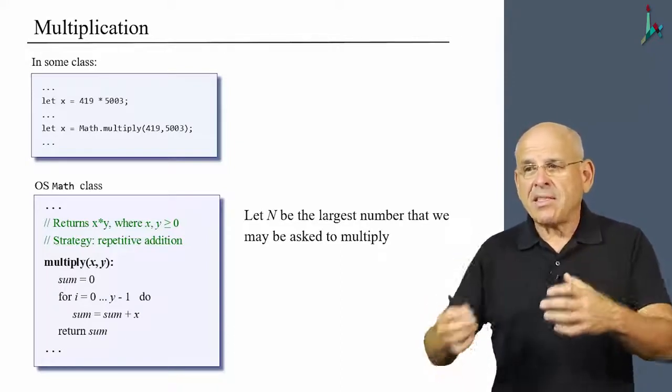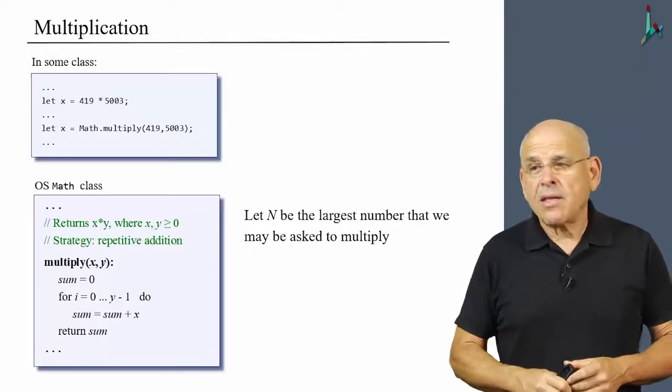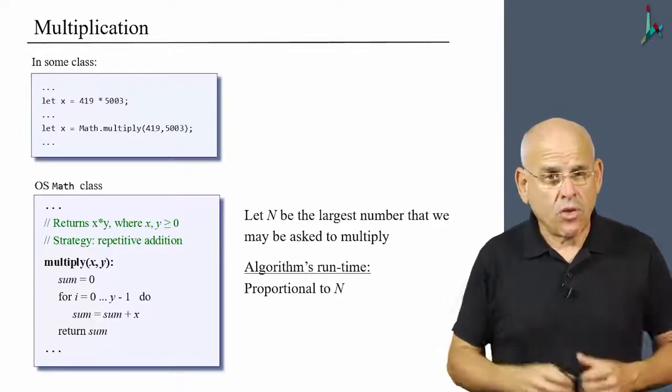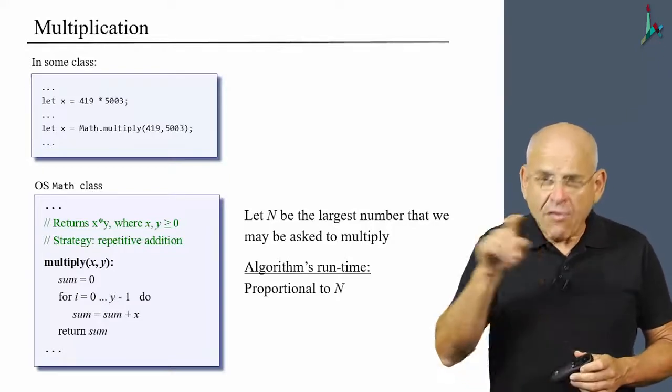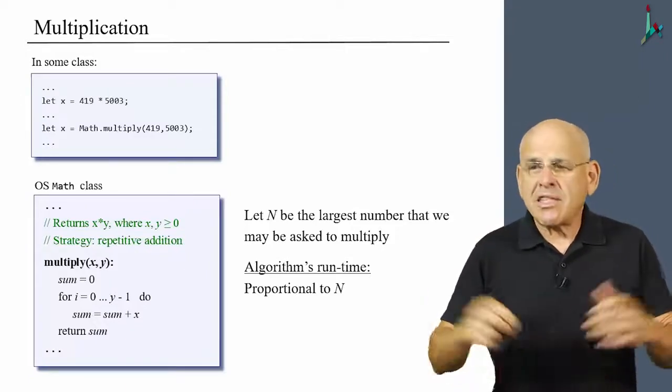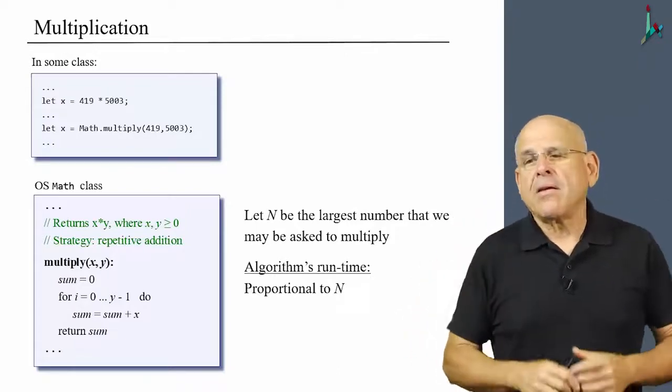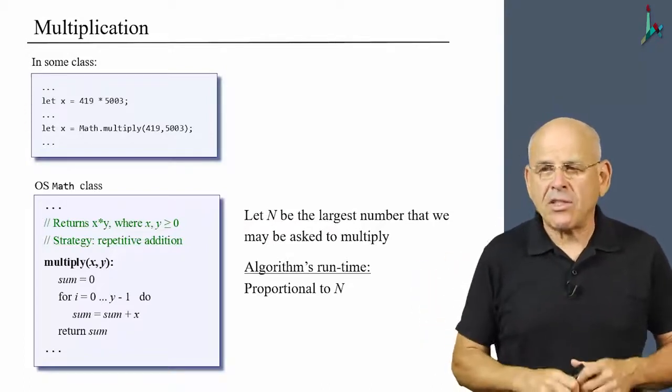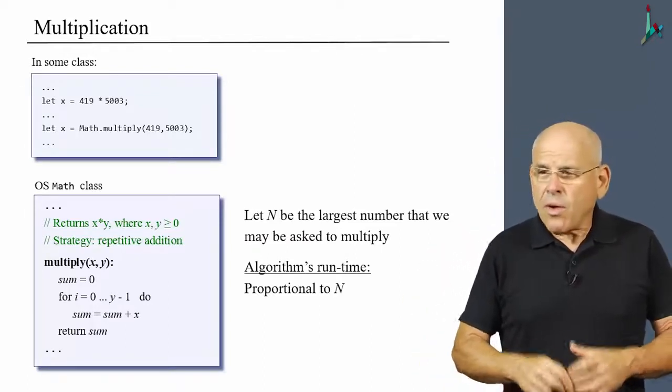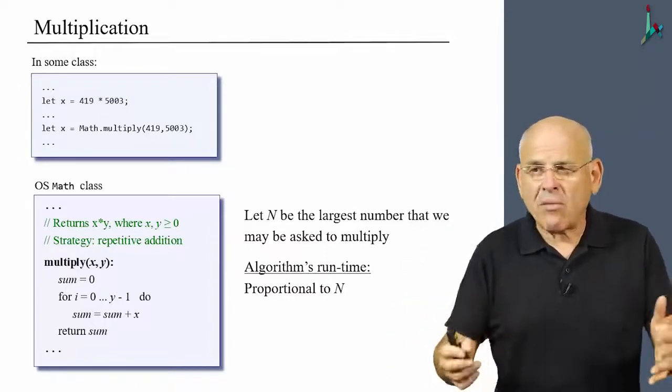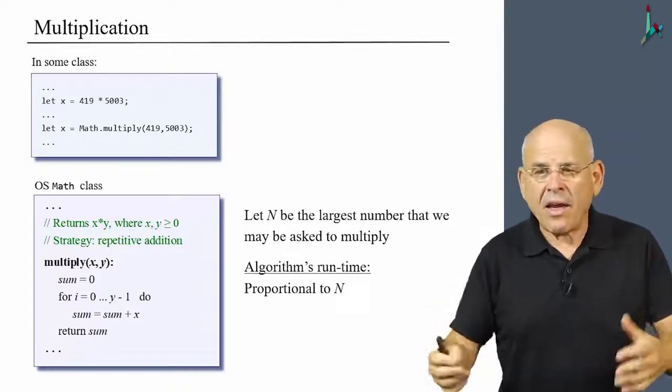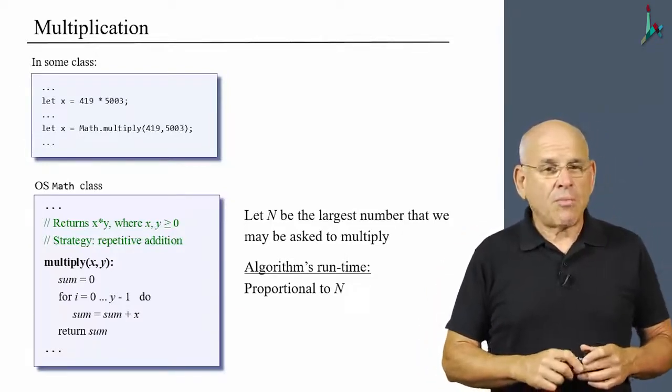If y is a large number, then we are going to have many iterations in this program. We're going to have y iterations in this particular algorithm. And if you ask me, what is the running time of this algorithm? Then in computer science, when we are asked to give such assessments, we always take a very honest and conservative standpoint. We try to give what is known as the worst case answer. So let us assume that n is the largest number that we may be asked to multiply.